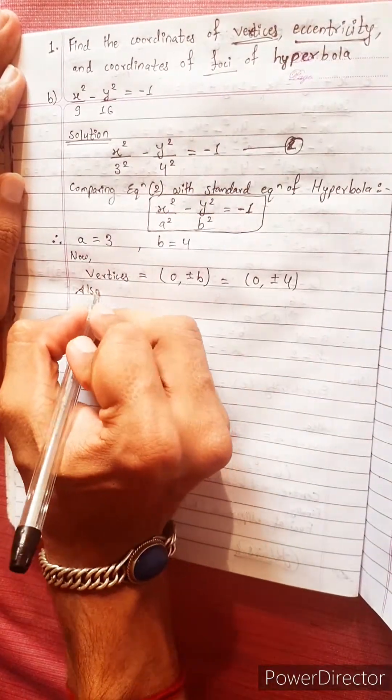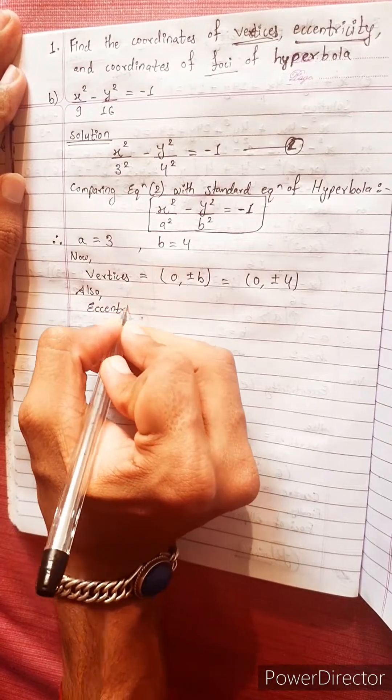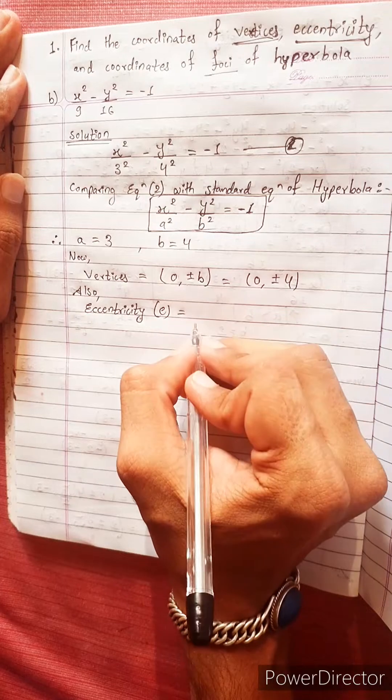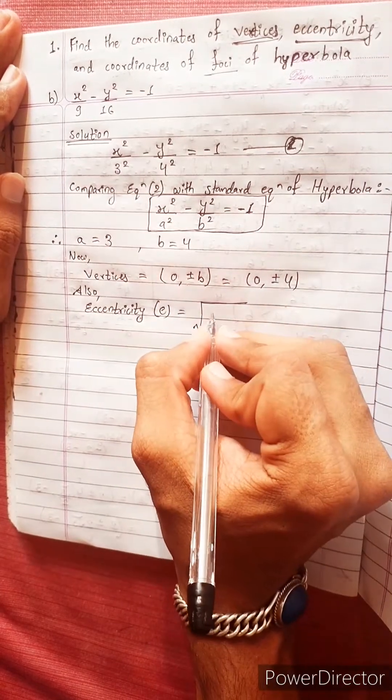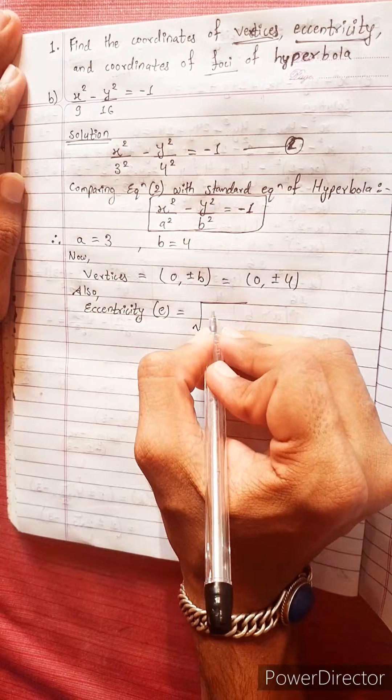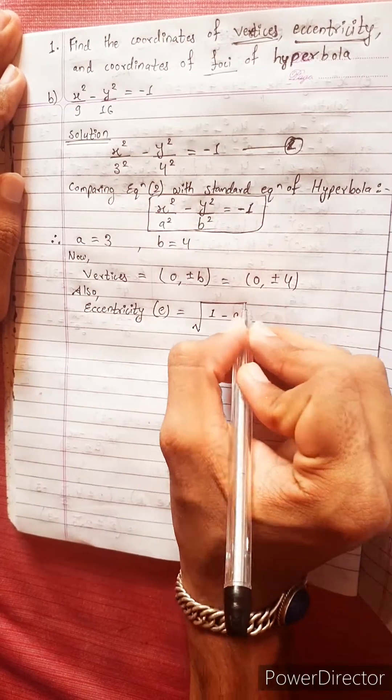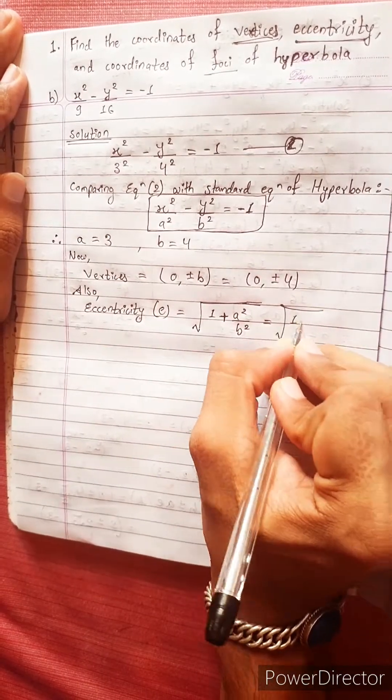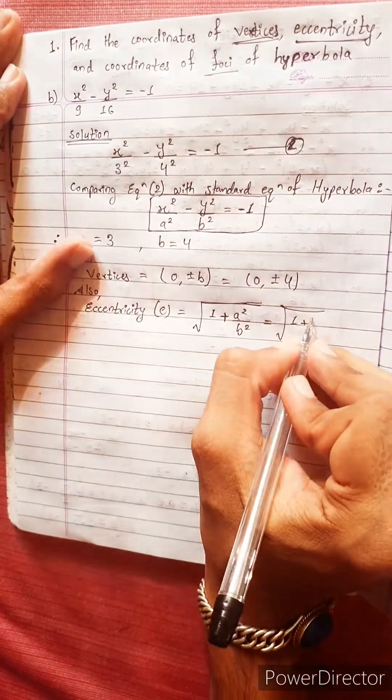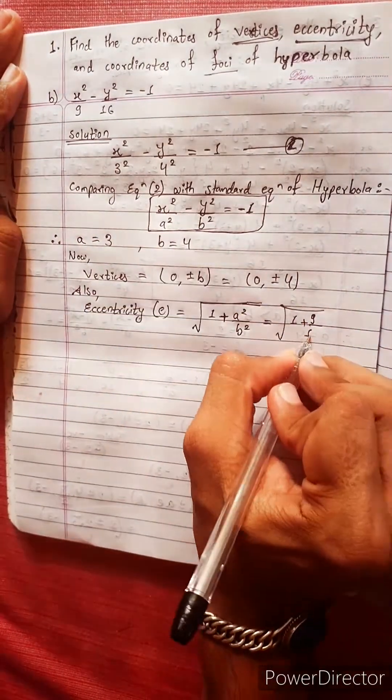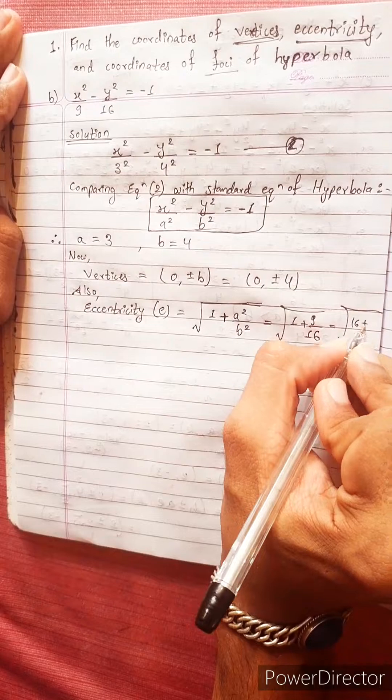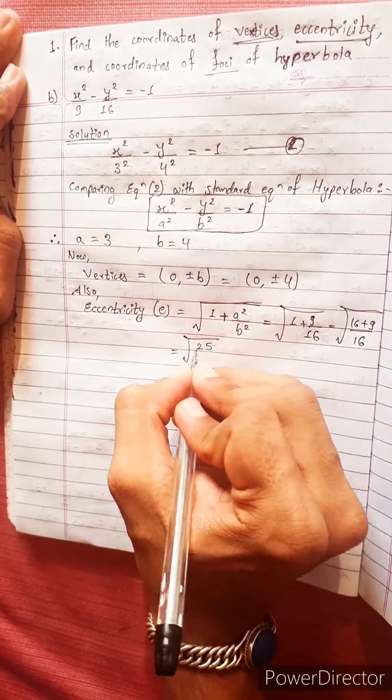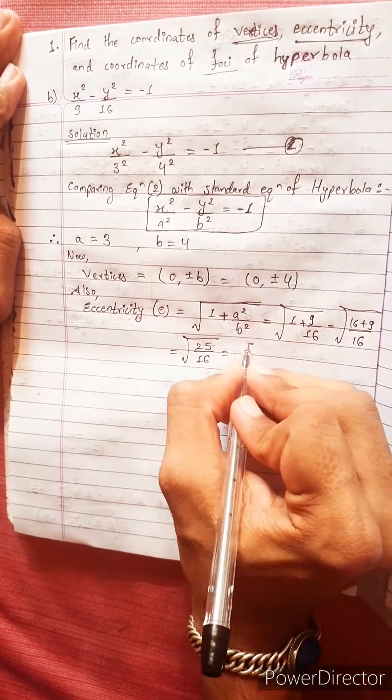Eccentricity e equals square root of (1 plus a squared divided by b squared). That's square root of (1 plus 9 divided by 16) equals square root of 25 by 16, which equals 5 by 4.